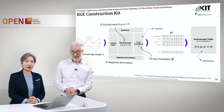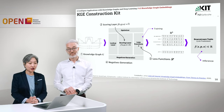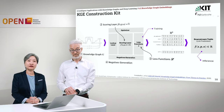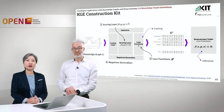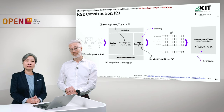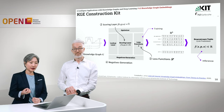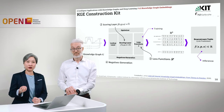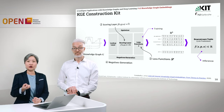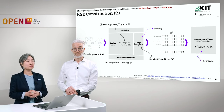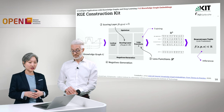To recap our KGE Construction Kit: first we have the knowledge graph, with which we generate the embeddings and apply the scoring layer. We then use a loss function to optimize our model, and because we use the pairwise margin-based hinge loss, we also need to generate negative triples. Once we finish training, we have the resulting model, which is then used during inference time for prediction in downstream tasks such as link prediction or triple classification.